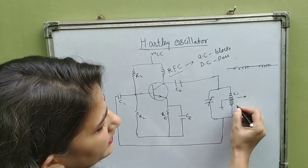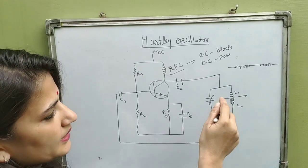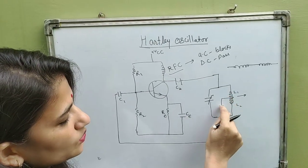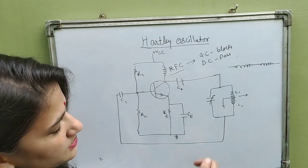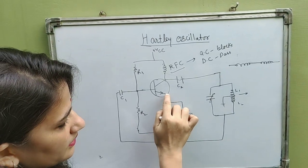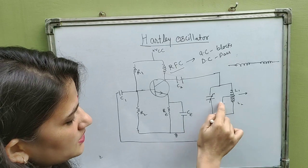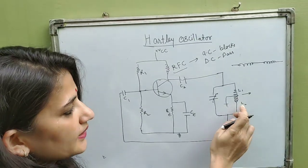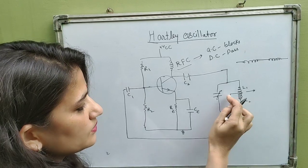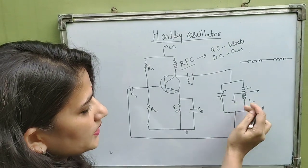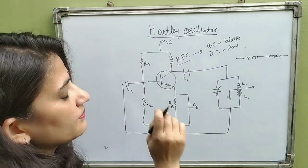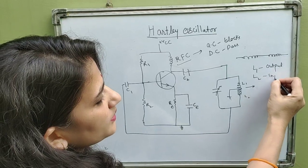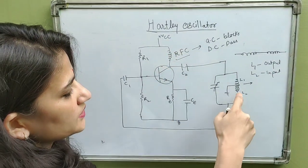The two parts are L1 and L2. L1 is connected to the collector through coupling capacitor C2, and the other part of L1 is connected to ground. This part is connected to the emitter circuit through CE and RE. L2 is connected such that one part connects to the tank circuit and the other part connects to the input via a coupling capacitor. So L1 is connected to the output section and L2 is connected to the input section.